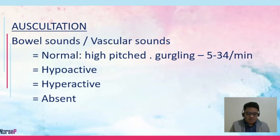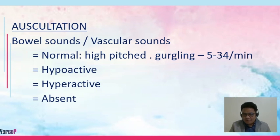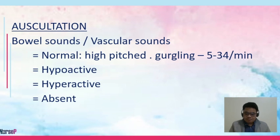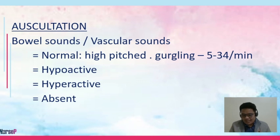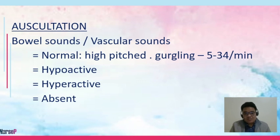We auscultate for both bowel sounds and vascular sounds. For bowel sounds, use the diaphragm of the stethoscope. The normal rate of bowel sounds is every 5 to 20 seconds — high-pitched and gurgling at 5 to 34 per minute. Bowel sounds are considered hypoactive if there are 1 to 2 sounds in 2 minutes, and hyperactive if there are 5 to 6 sounds in 30 seconds.